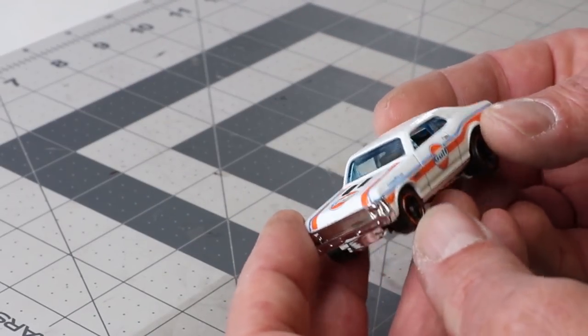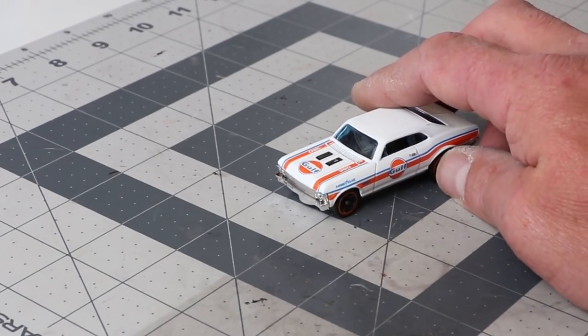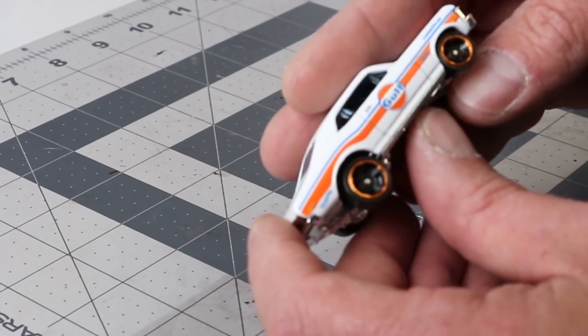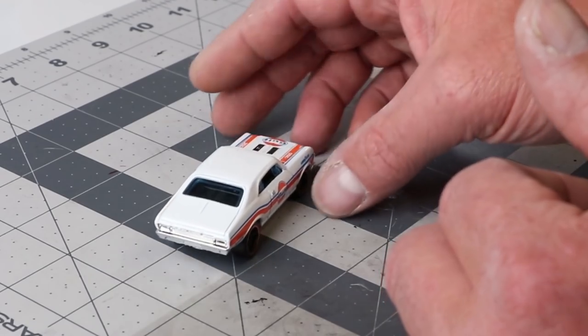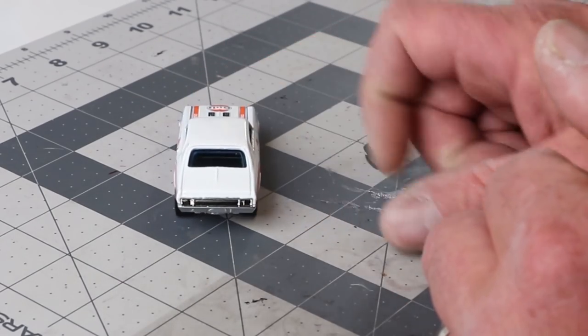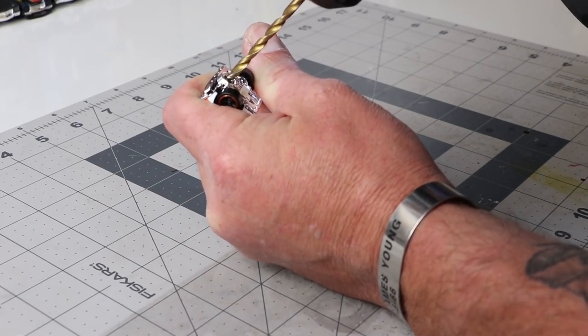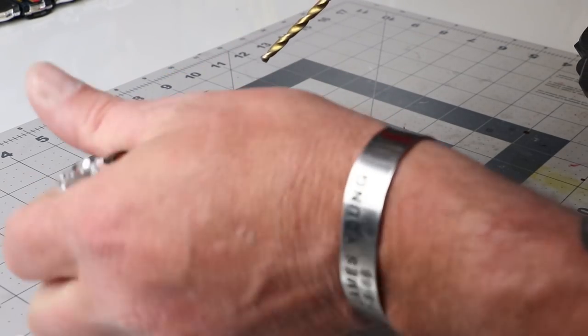Alright, so I have a Hot Wheels Nova. This is the Gulf version, and I have a couple of these. I had one actually sent in from a subscriber, and another one I had actually found at Walmart. Pretty cool car. Rolls pretty good. Not overly enthusiastic about the stance, but for the purpose of what we're doing, I'm going to change that.